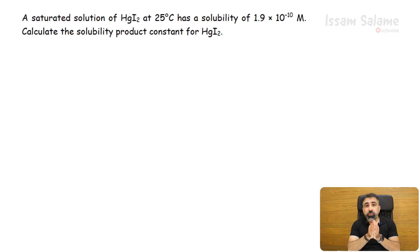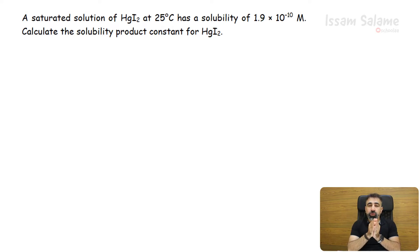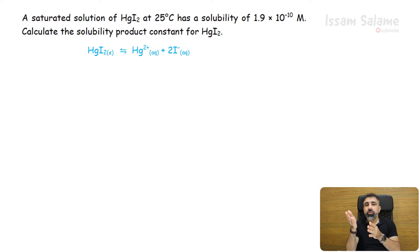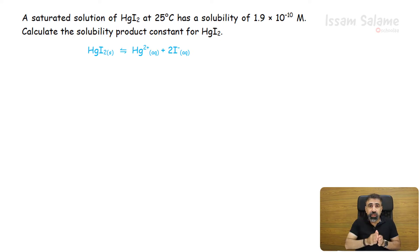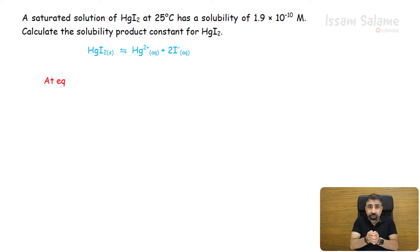Now, what if we want to calculate the solubility product constant from the solubility? A saturated solution of mercury iodide at 25 degrees Celsius has a solubility of 1.9 × 10⁻¹⁰ molar. Calculate the solubility product constant for mercury iodide. We write the balanced equation: mercury iodide solid dissociates into mercury ions plus 2 iodide ions. The concentration of mercury ions at equilibrium equals the amount dissolved, which we call S, and the concentration of iodide ions at equilibrium equals 2S.